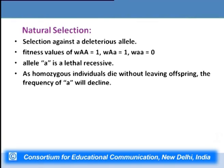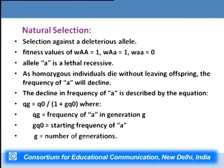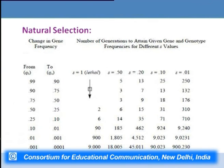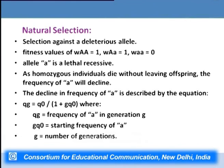As homozygous recessive individuals die without leaving offspring, over many generations the frequency of small a keeps declining and frequency of capital A keeps increasing. This decline in frequency of small a can be given by: Q_G = Q₀ / (1 + G·Q₀), where Q_G is the frequency of small a in generation G, Q₀ is the starting frequency of small a, and G is the number of generations. This is how natural selection affects allelic frequency from one generation to the next, making it a very important process alongside mutation, migration, and genetic drift.